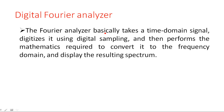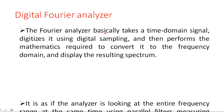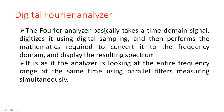The Fourier analyzer basically takes a time domain signal, digitizes it using digital sampling, and then performs the mathematics required to convert it into frequency domain and display the resultant spectrum. It is as if the analyzer is looking at the entire frequency range at the same time using parallel filter banks measuring simultaneously. To get a narrow frequency spectrum, the signal passes through parallel filter banks to measure frequencies simultaneously.